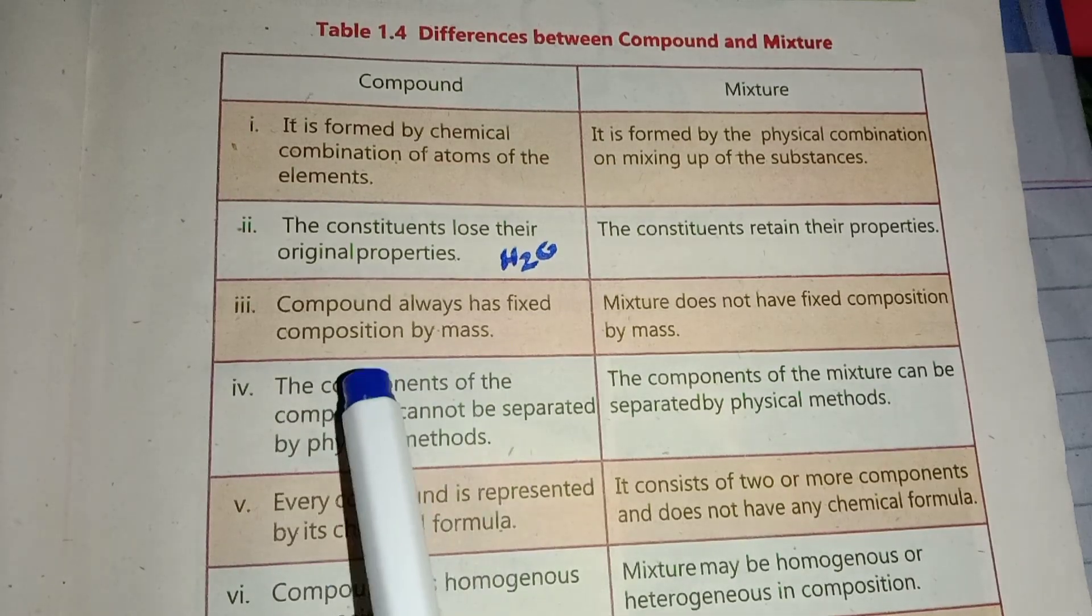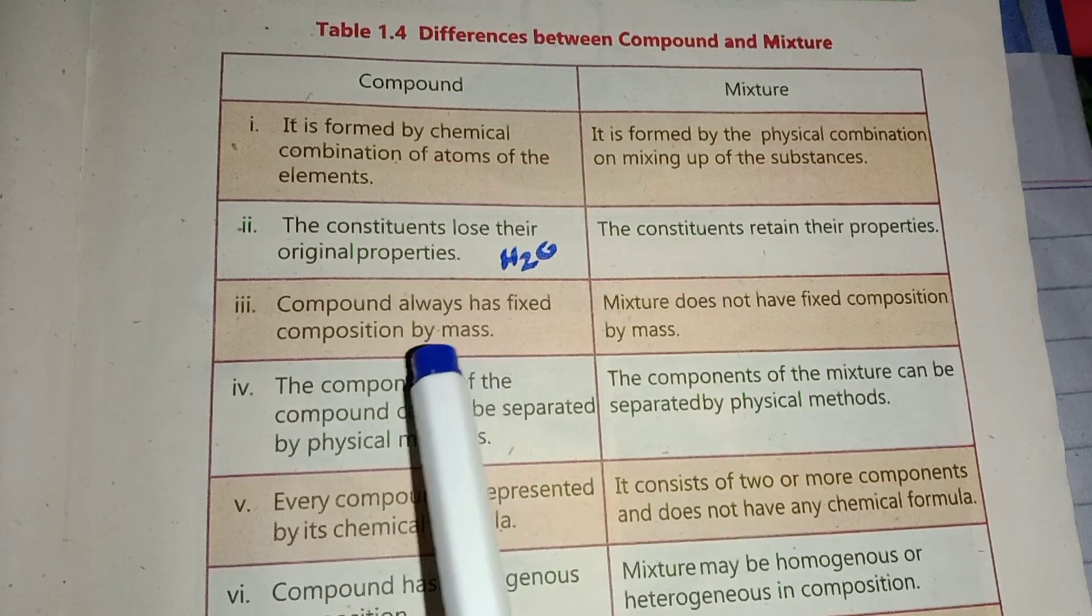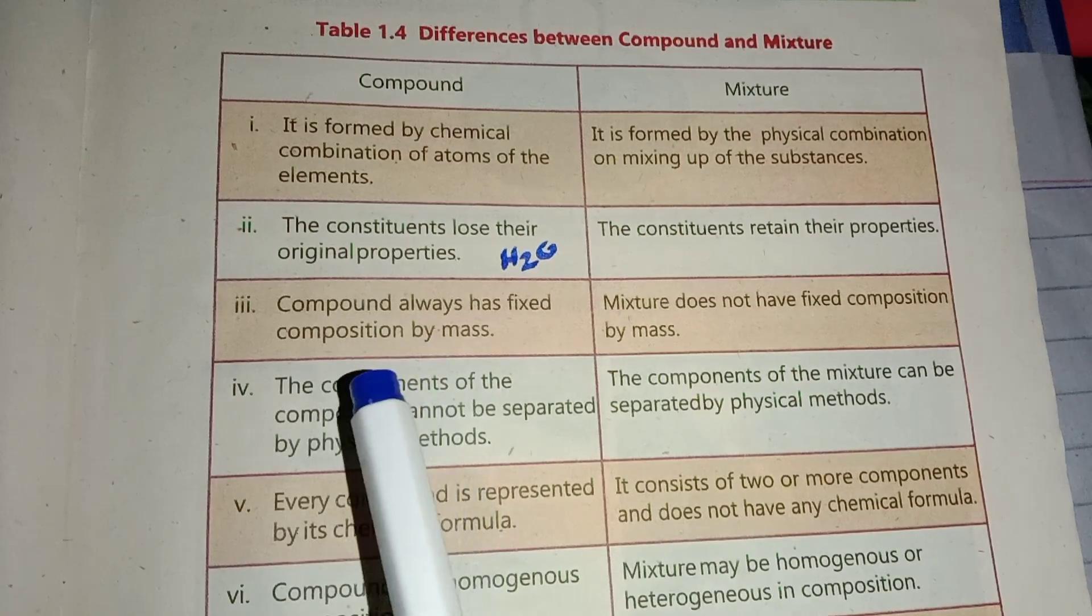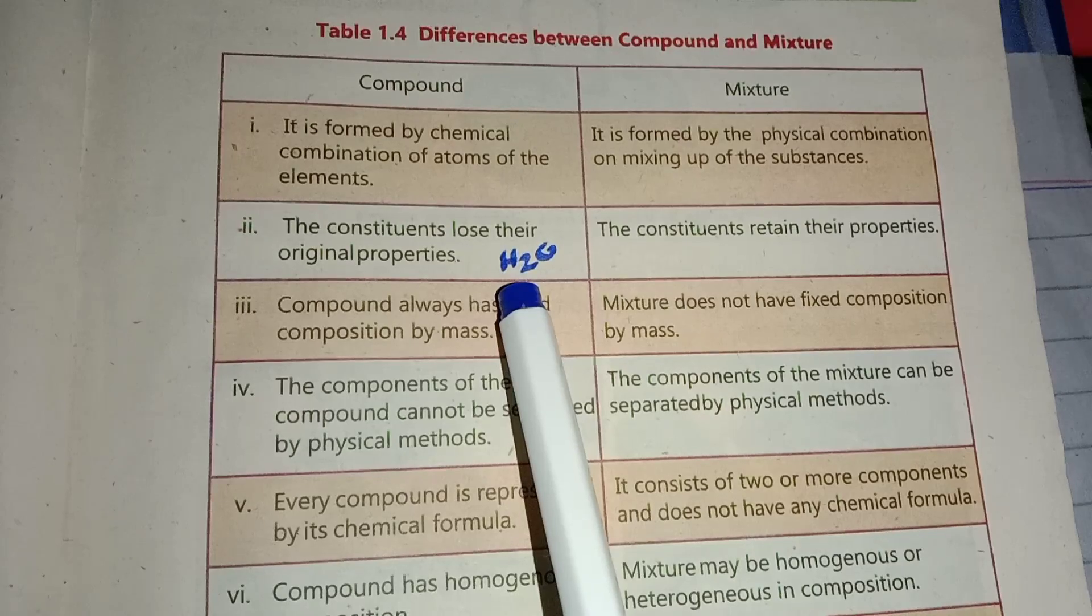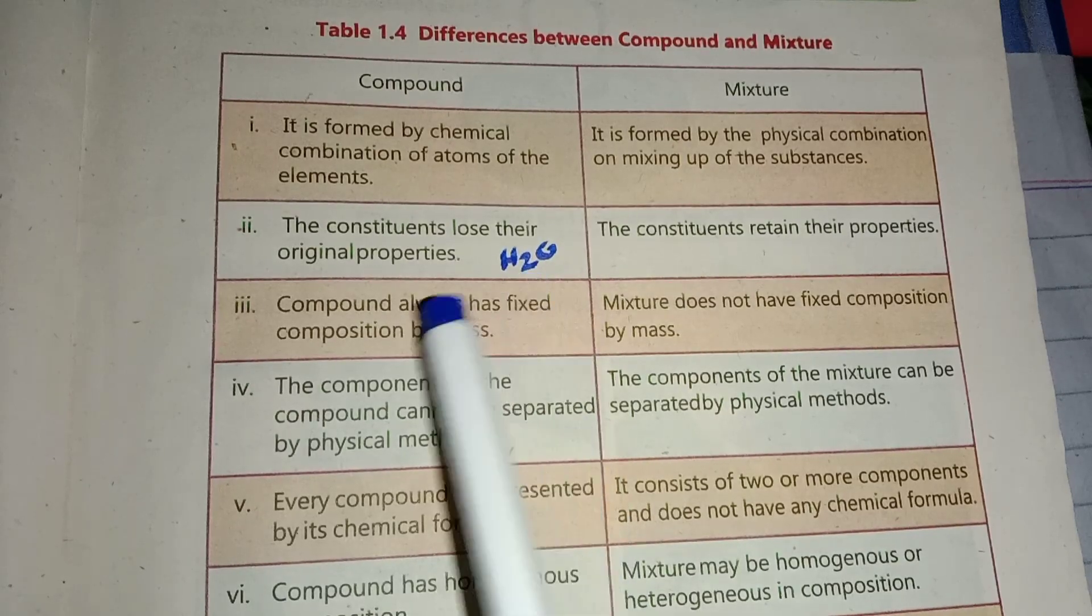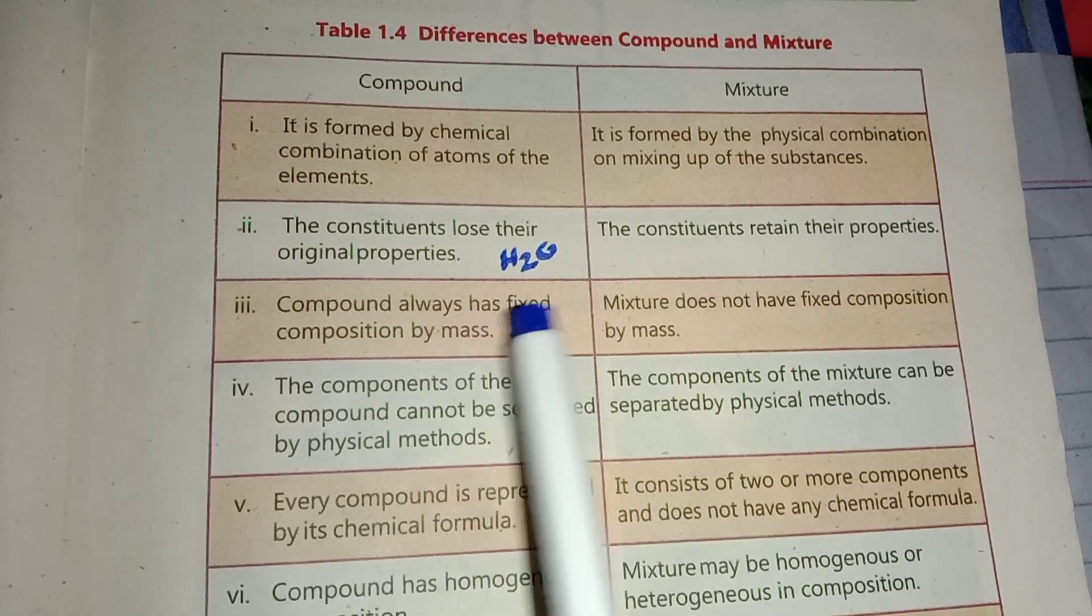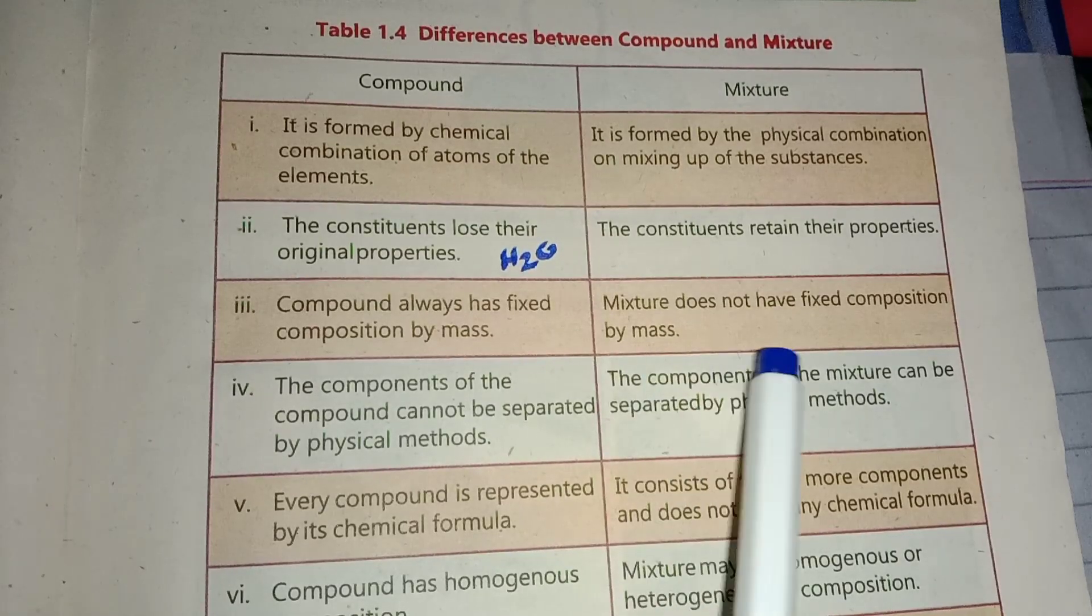Third difference: Compound always has fixed composition by mass. Water has a fixed composition. Mixture does not have fixed composition by mass.